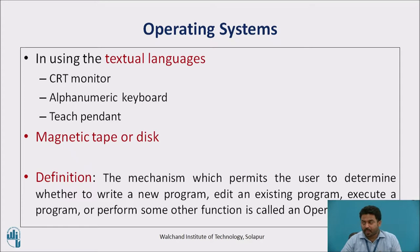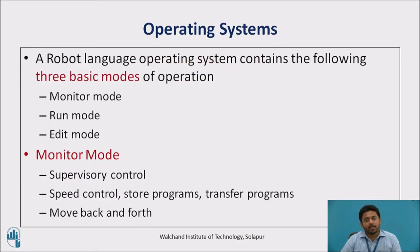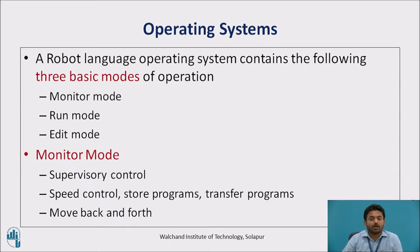Operating Systems: In using the textual languages, the programmer has available a CRT monitor, alphanumeric keyboard, and a teach pendant. There should also be some means of storing the programs, either on magnetic tape or disk. The mechanism which permits the user to determine whether to write a new program, edit an existing program, execute a program, or perform some other function is called an Operating System. A Robot Language Operating System contains the following three basic modes of operation: Monitor Mode, Run Mode, and Edit Mode.